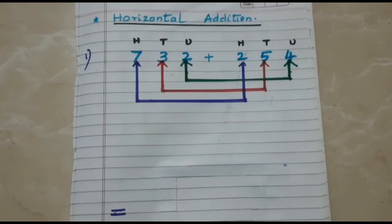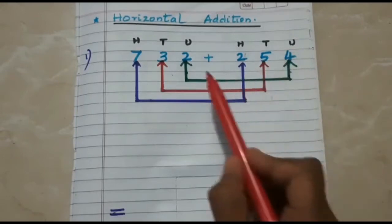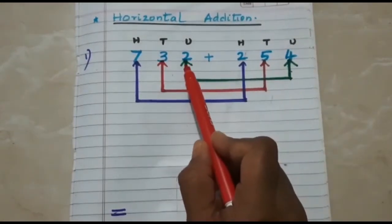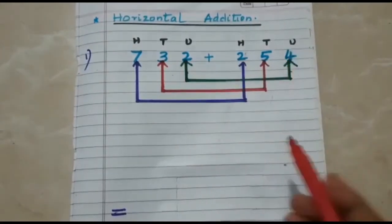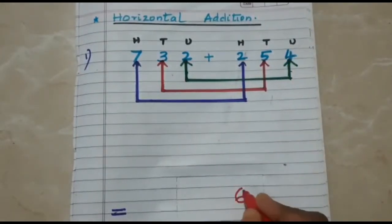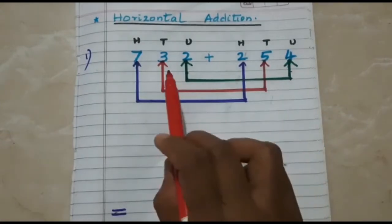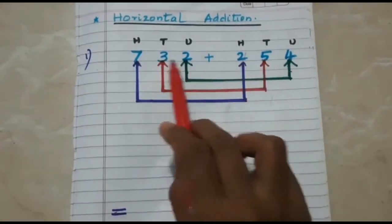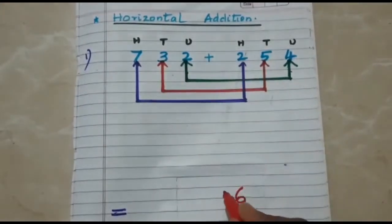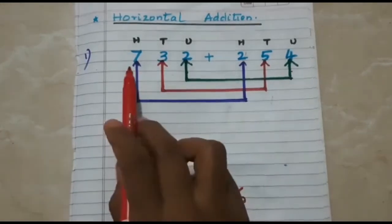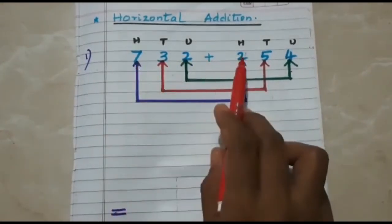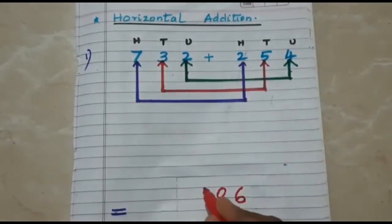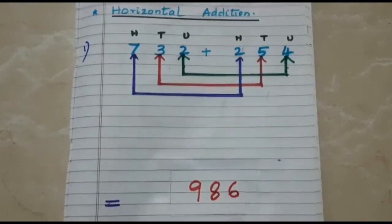So, we are going to carry out the addition of the numbers. First we begin with units: 2 plus 4 is 6. Then tens: 3 plus 5 is 8. Then hundreds: 7 plus 2 is 9. In this way, we carry out the horizontal addition.